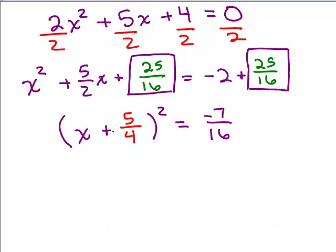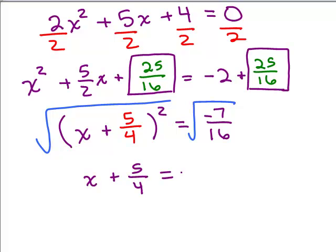So you have negative 7 sixteenths. All right, so I was just doing that scratch work. And now we're ready to go. We've got something squared equaling a number. So we could take the square roots of both sides. That's the square root property so that we have x plus 5 fourths.